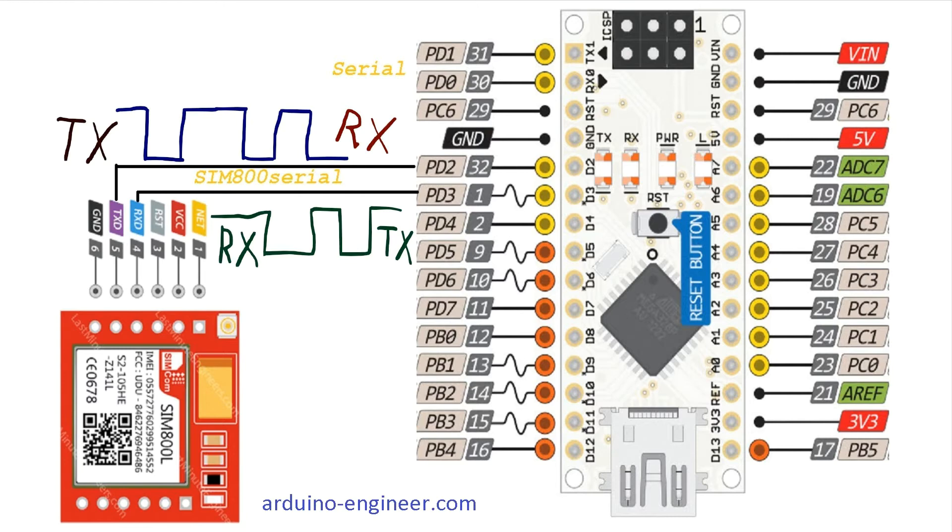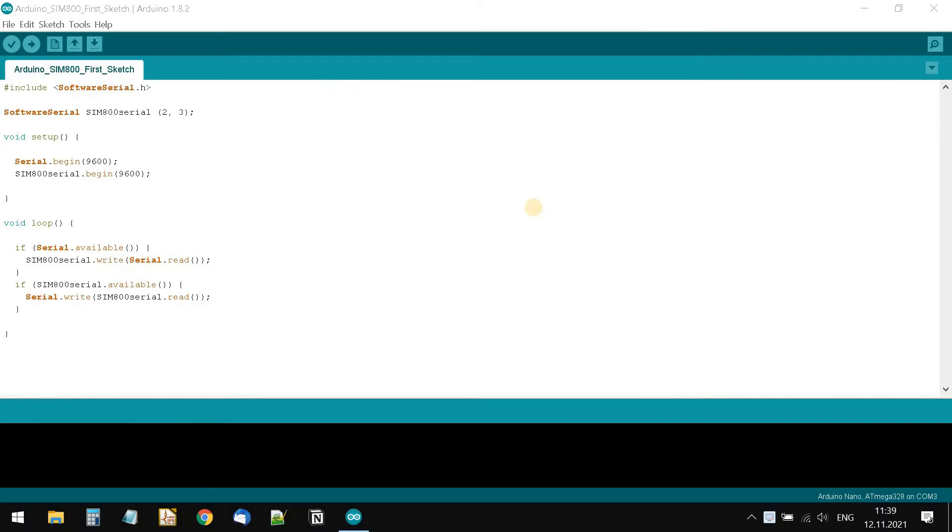Now let's move on to the program. In general, this program text is a gateway between the SIM800 and the port monitor in the Arduino IDE. The first line is a call to the software artificial UART library, software serial. The next line is to create an instance of the software serial port class. The numbers of the pins to which the RX and TX pins of the SIM800 module are connected are immediately entered.